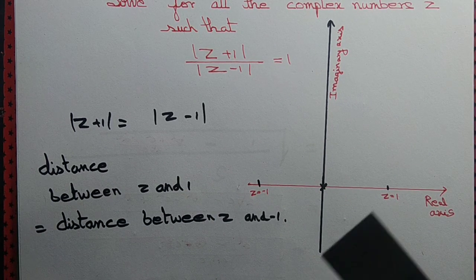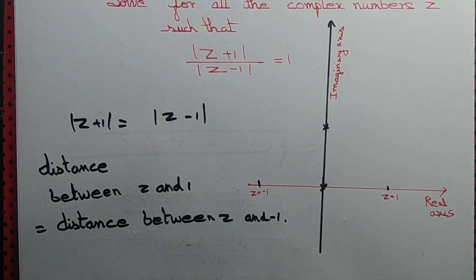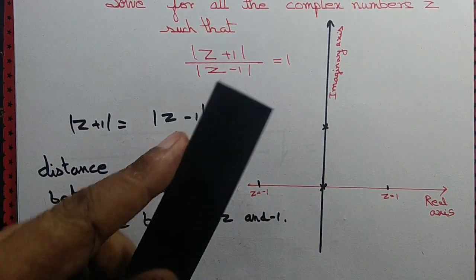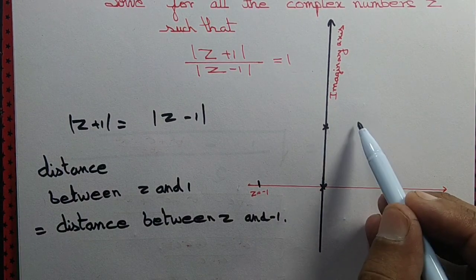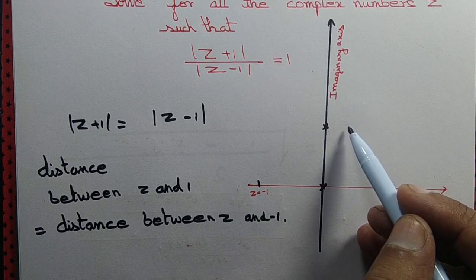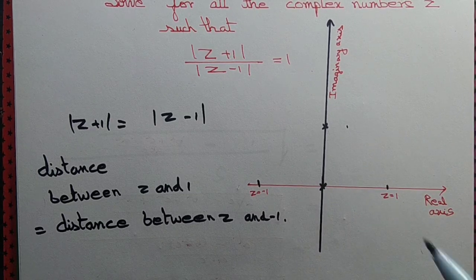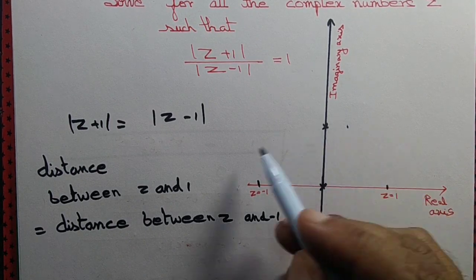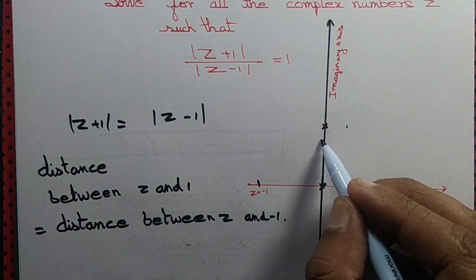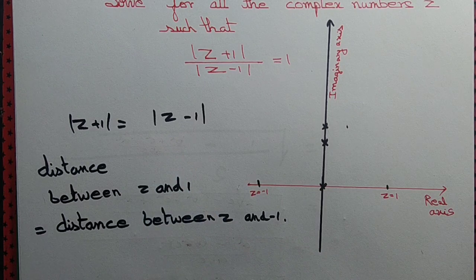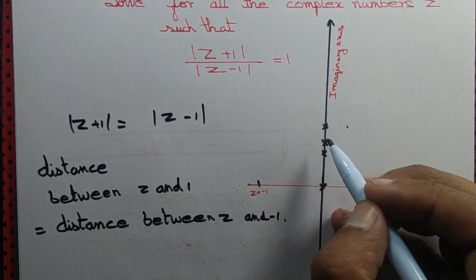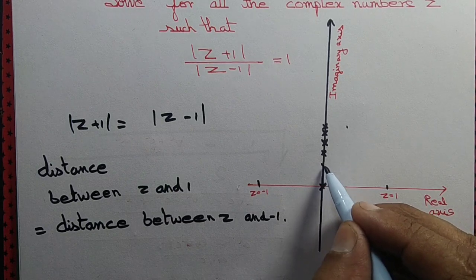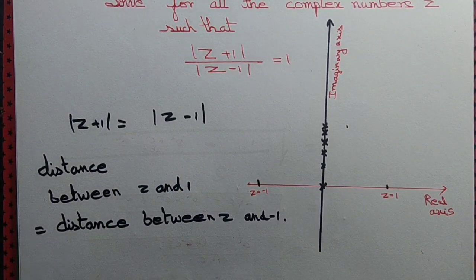Can we have another point? If we take any point on the imaginary axis, we observe that the distance to z equals 1 must be the same as the distance to z equals minus 1. If we take any point off this axis, the distance to z equals minus 1 will be greater than to z equals 1. So any point on the imaginary axis satisfies this equation and no point outside the imaginary axis does.